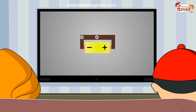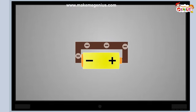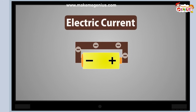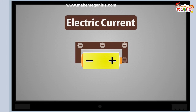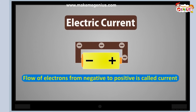When electric charges move in a wire, we say that an electric current flows in the wire. It's like the way a current of water flows in a river. Yes, it is like a constant flow of electrons through something. When a wire is connected to each end of the battery, electrons begin to flow from negative to positive — from minus to plus. And this flow of electrons is called current.